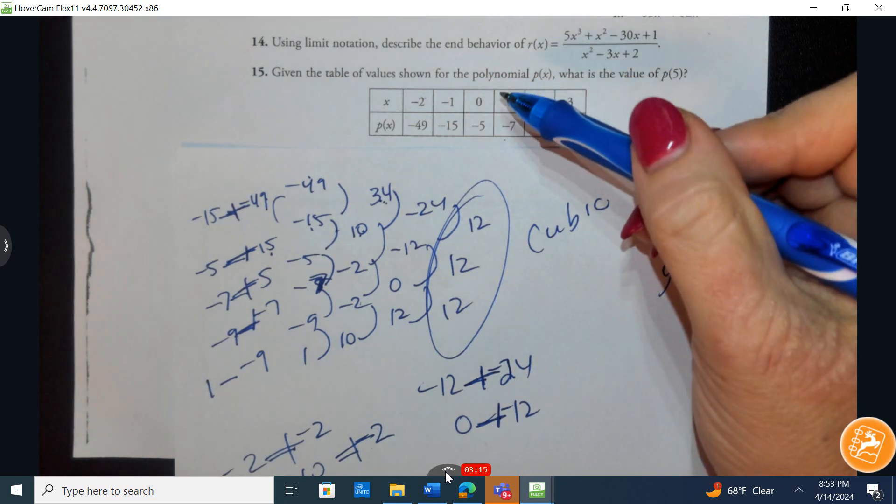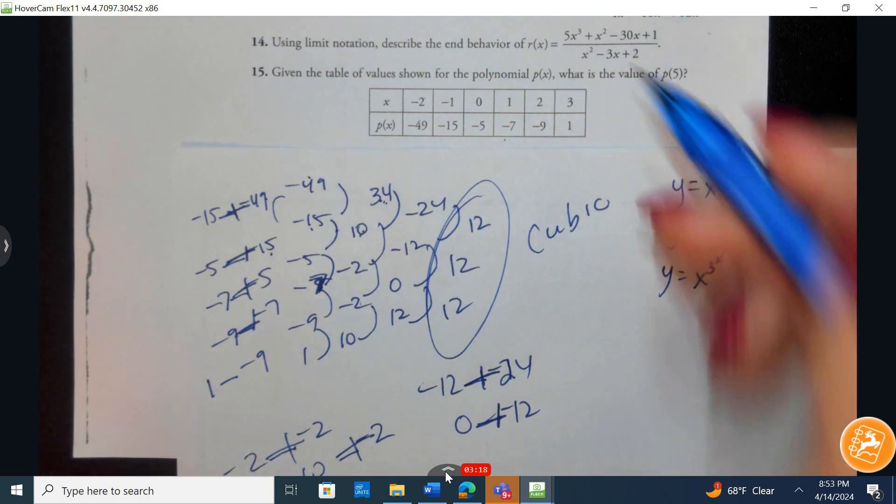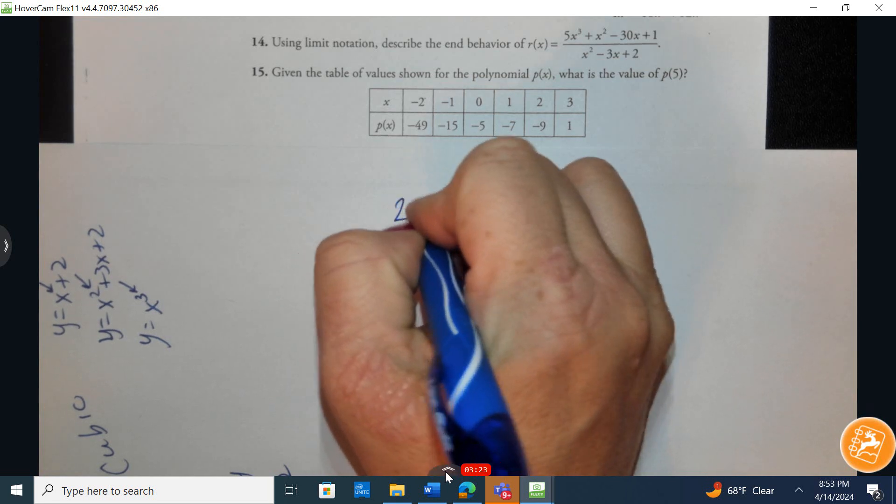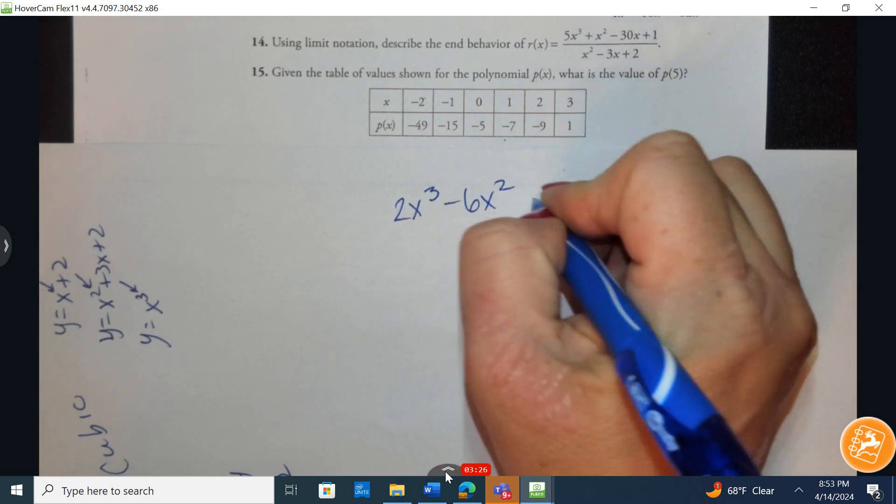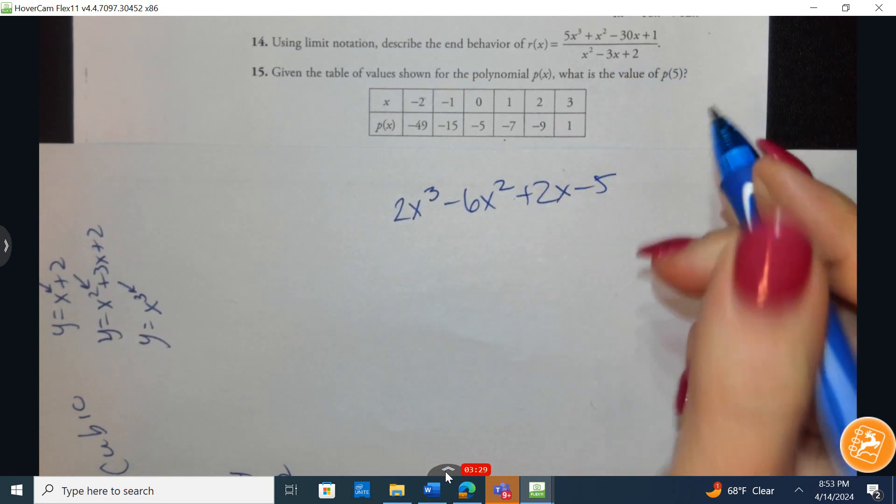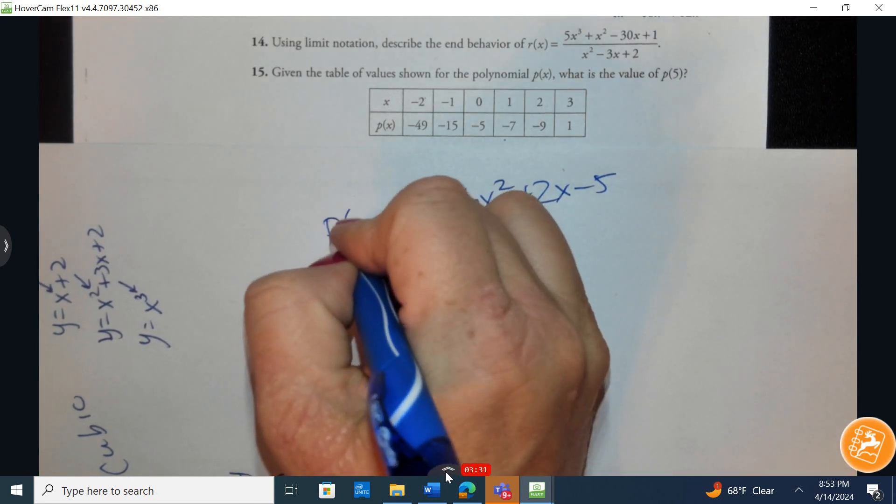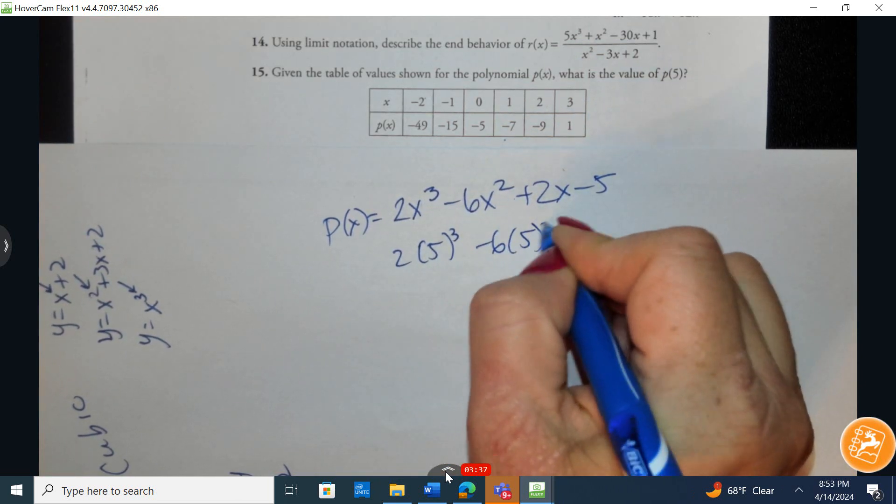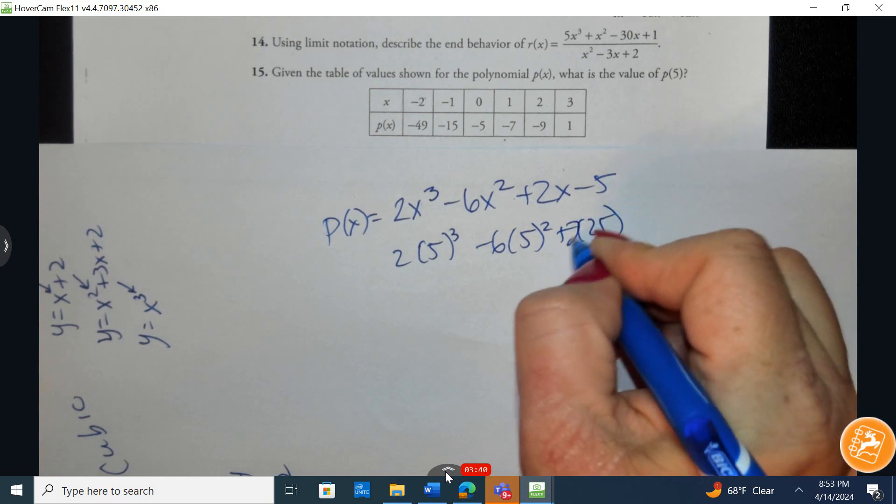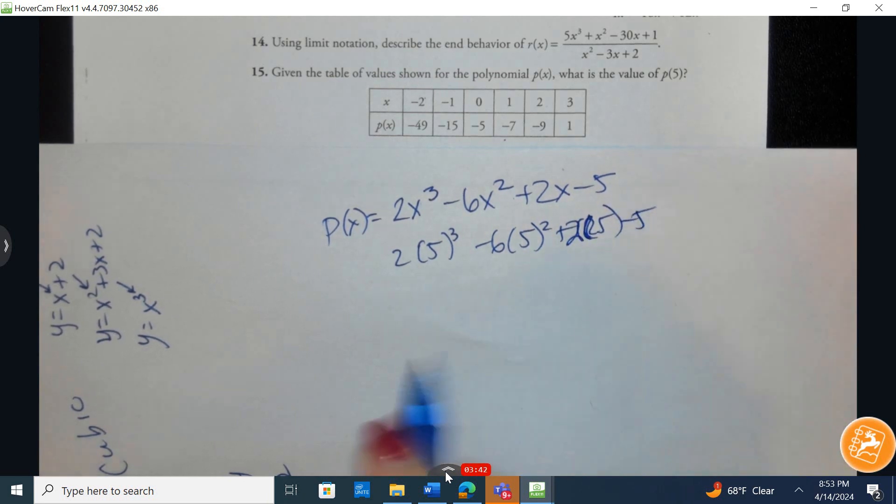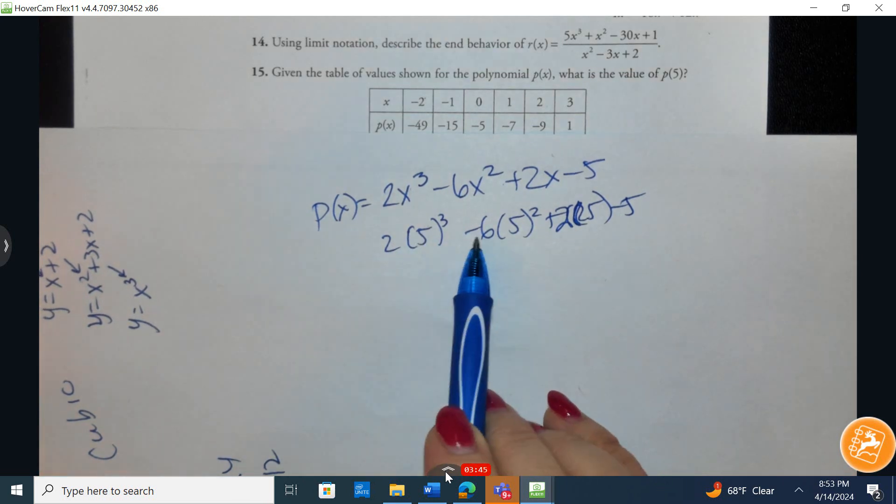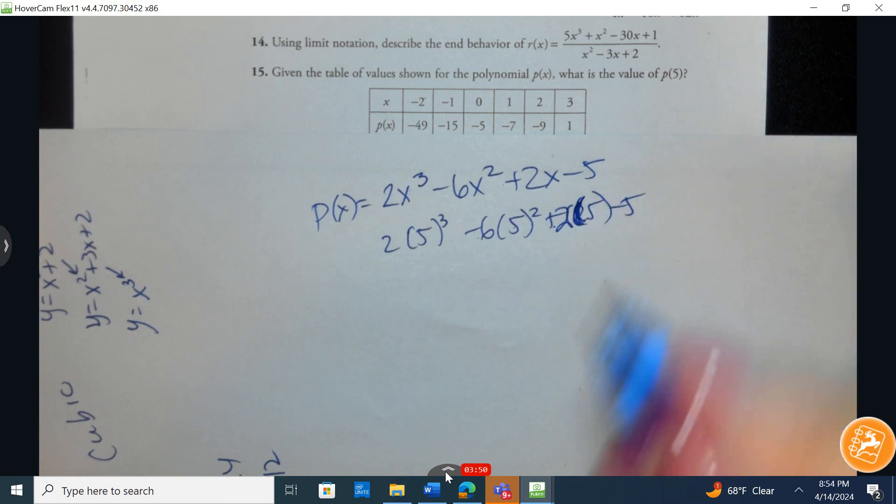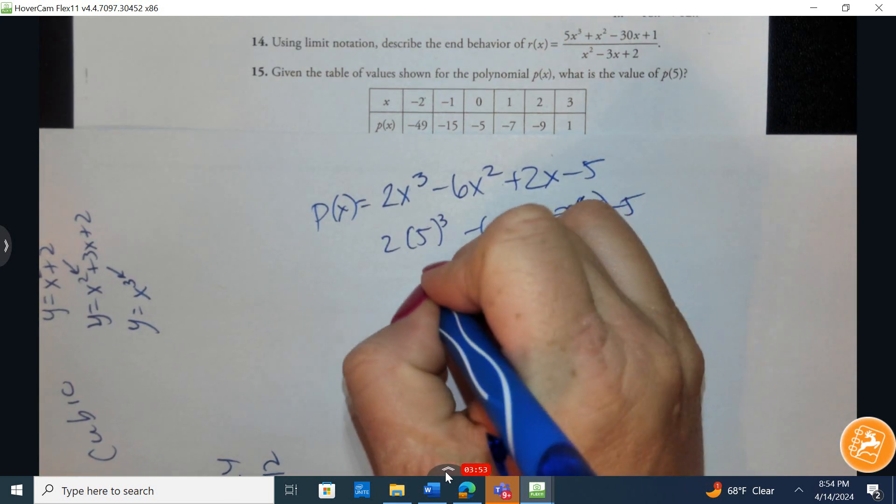And then you can calculate a cubic regression. When you calculate cubic regression, it's going to produce this answer: 2x cubed minus 6x squared plus 2x minus 5. We're asked to find P of 5, so I just substitute 5 in here. 2 times 5 to the third minus 6 times 5 squared plus 2 times 5 minus 5. So 2 times 125 minus 6 times 25 plus 10 minus 5, and we can come up with the answer of 105.